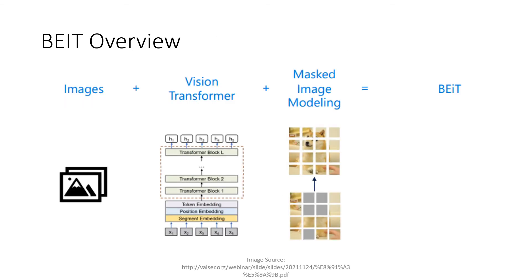Let's take a look at BEIT. BEIT consists of three main components: our data, which is our images; our model, which is our vision transformer; and our pre-training, which is our masked image modeling.